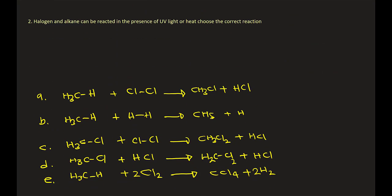Let's look at this question. Halogen and alkane can be reacted in the presence of UV light or heat. Choose the correct reaction. Now this one is tricky. Alkane has a special formula, CNH2N+2. That means all single bonds. That's a must.